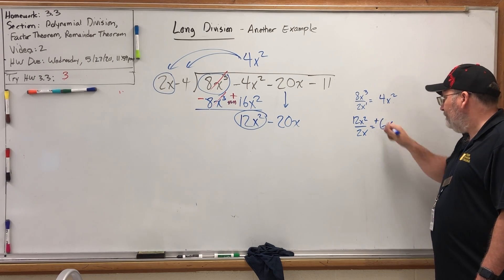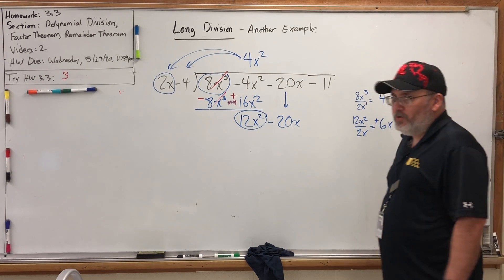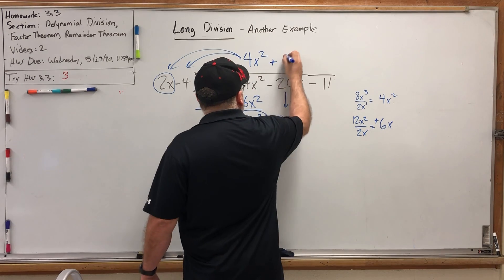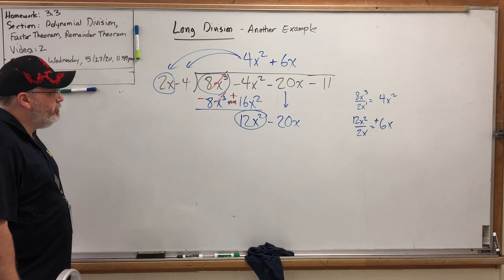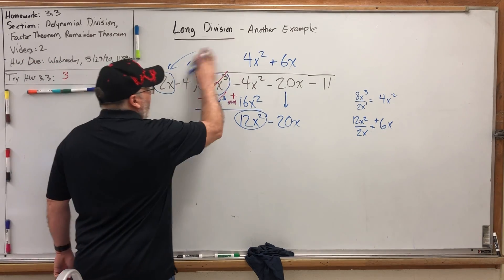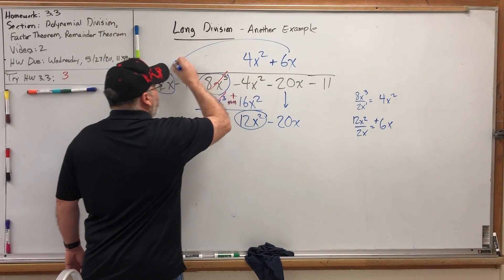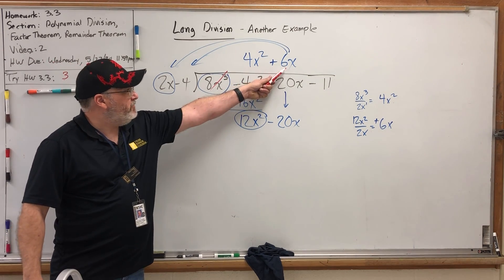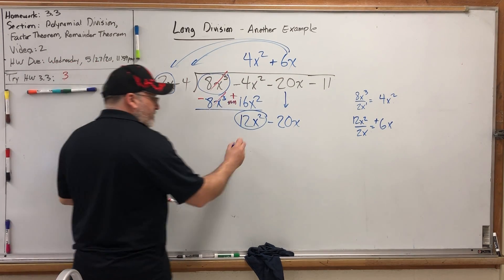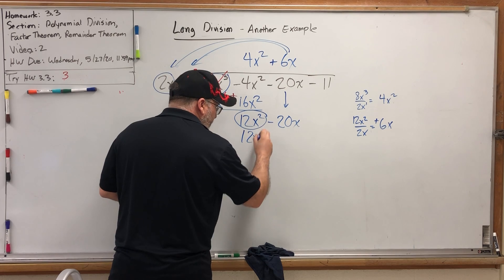More specifically, positive. Because when I write this term in the quotient, I have to write its sign. So positive 6x should be our next term in the quotient. And if we multiply it times the divisor by distributing...